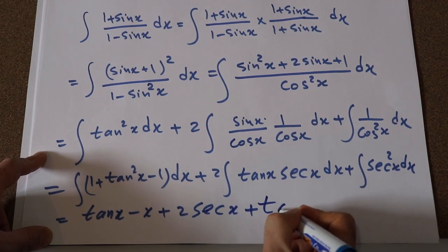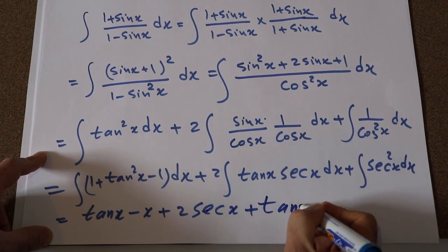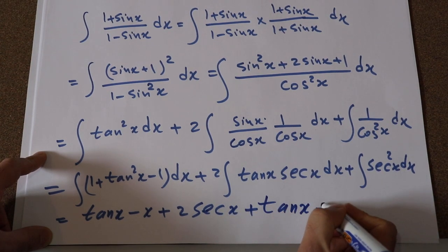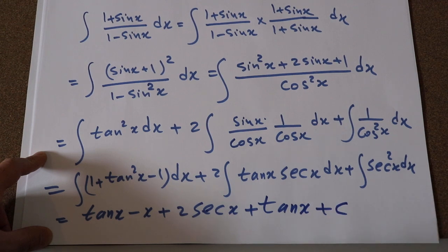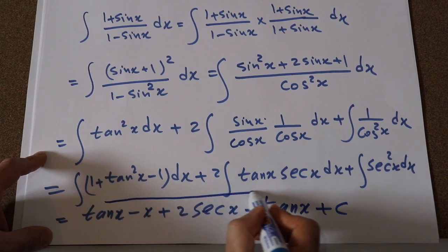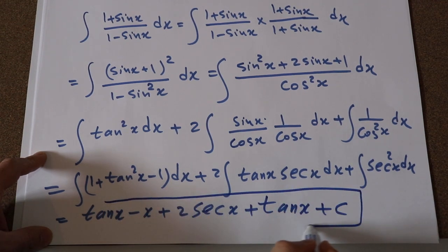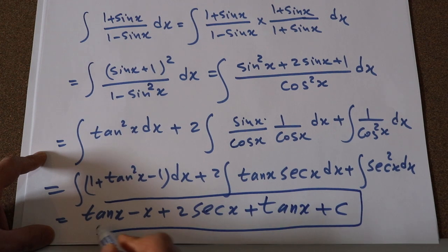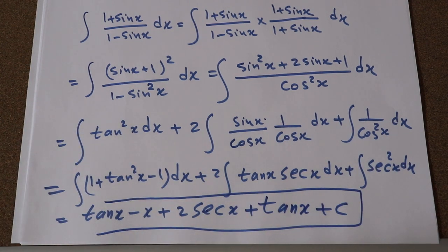So the final result is tan x minus x + 2 sec x + tan x + C, where C is the constant of integration. And this is the solution to our integral. I hope you found this video helpful.